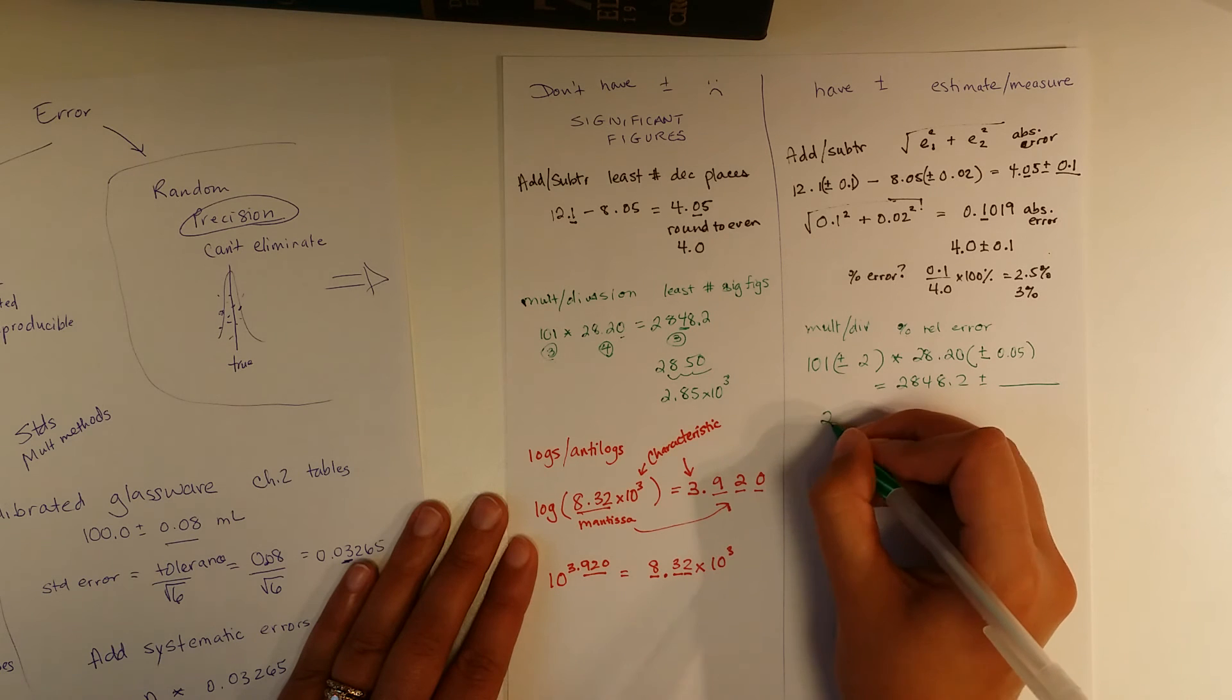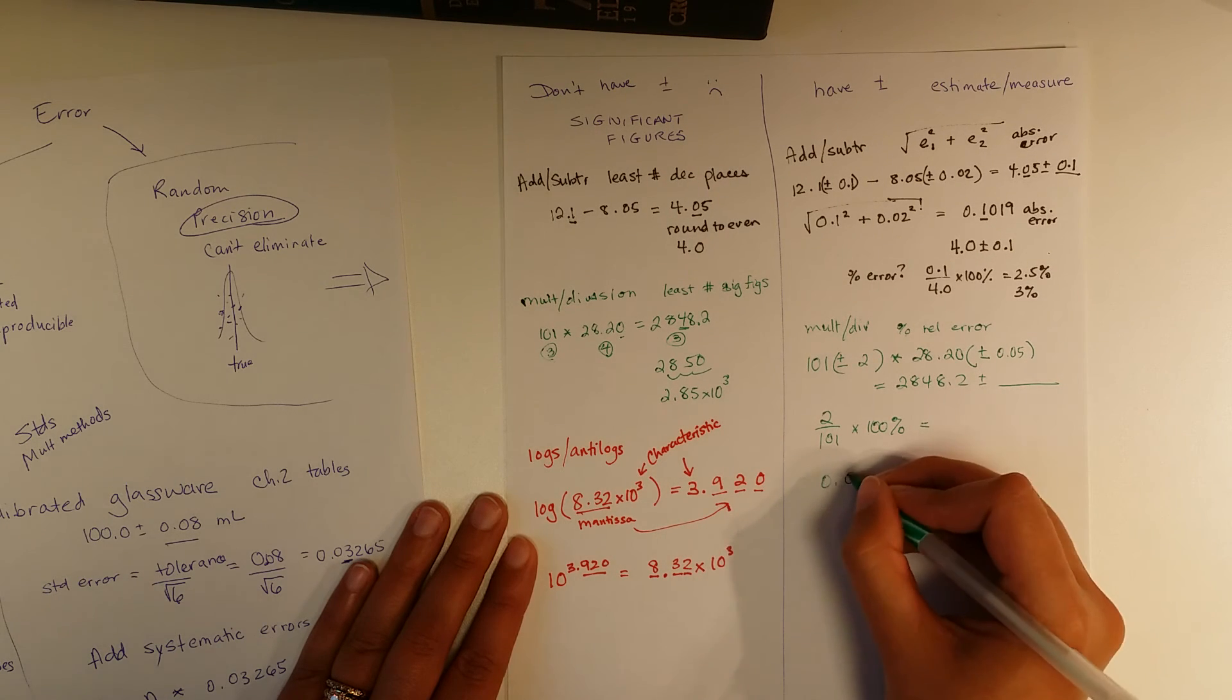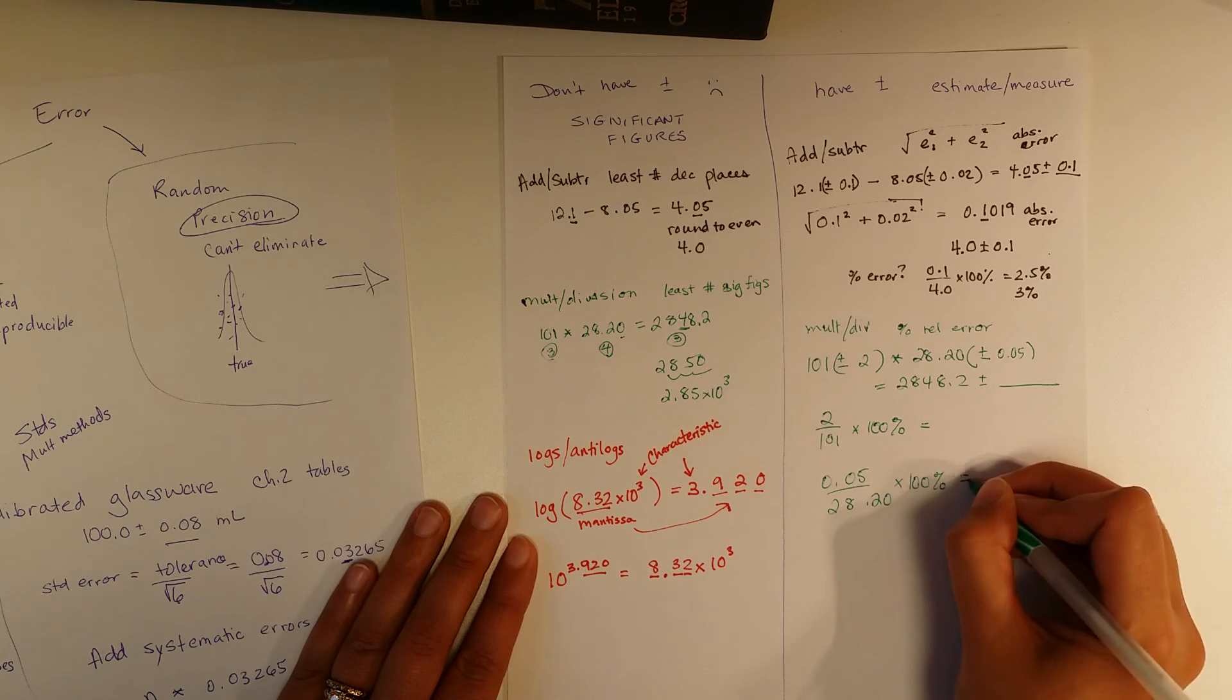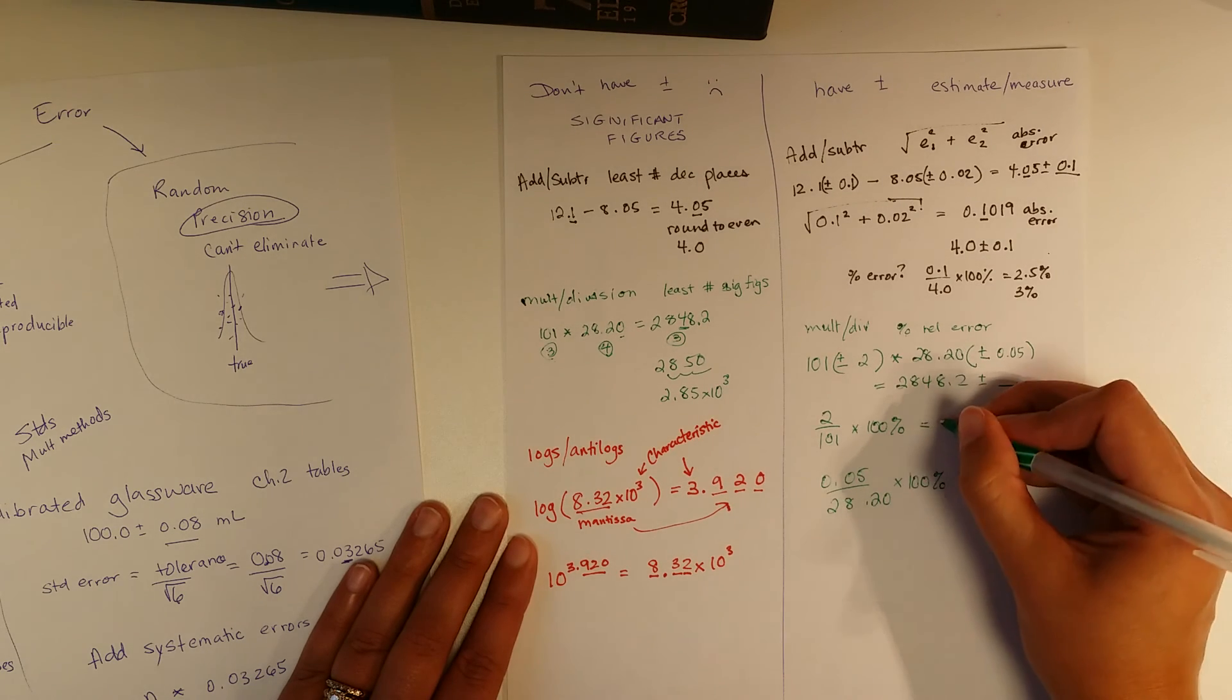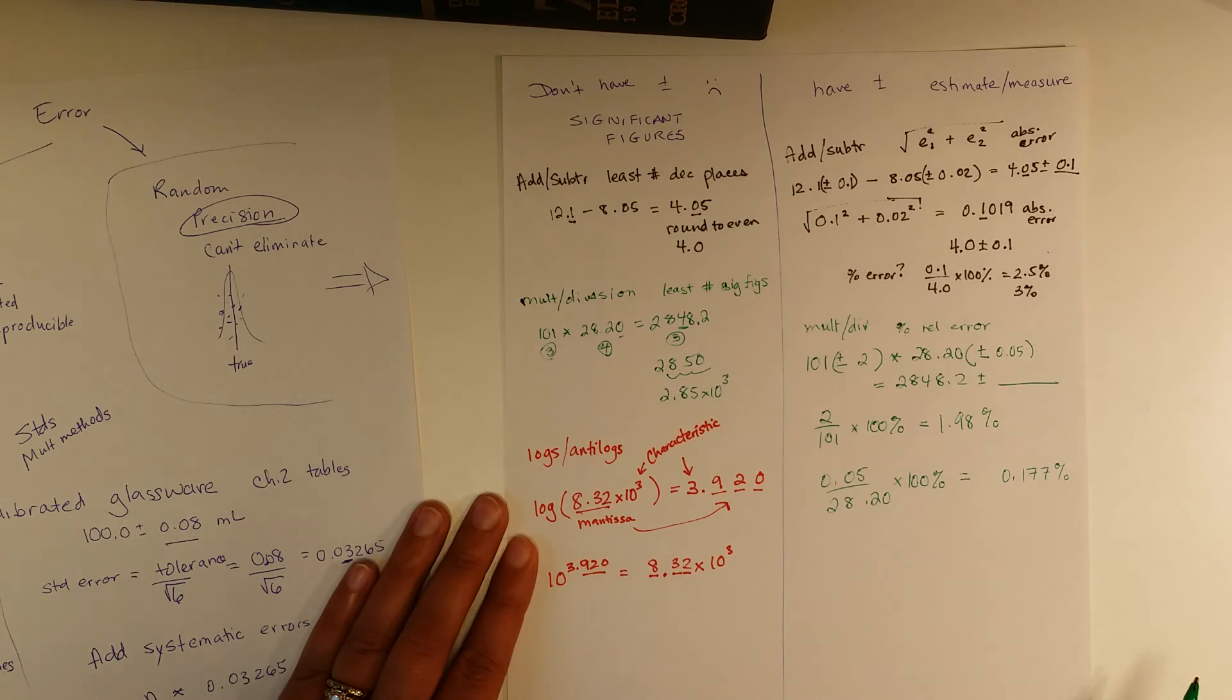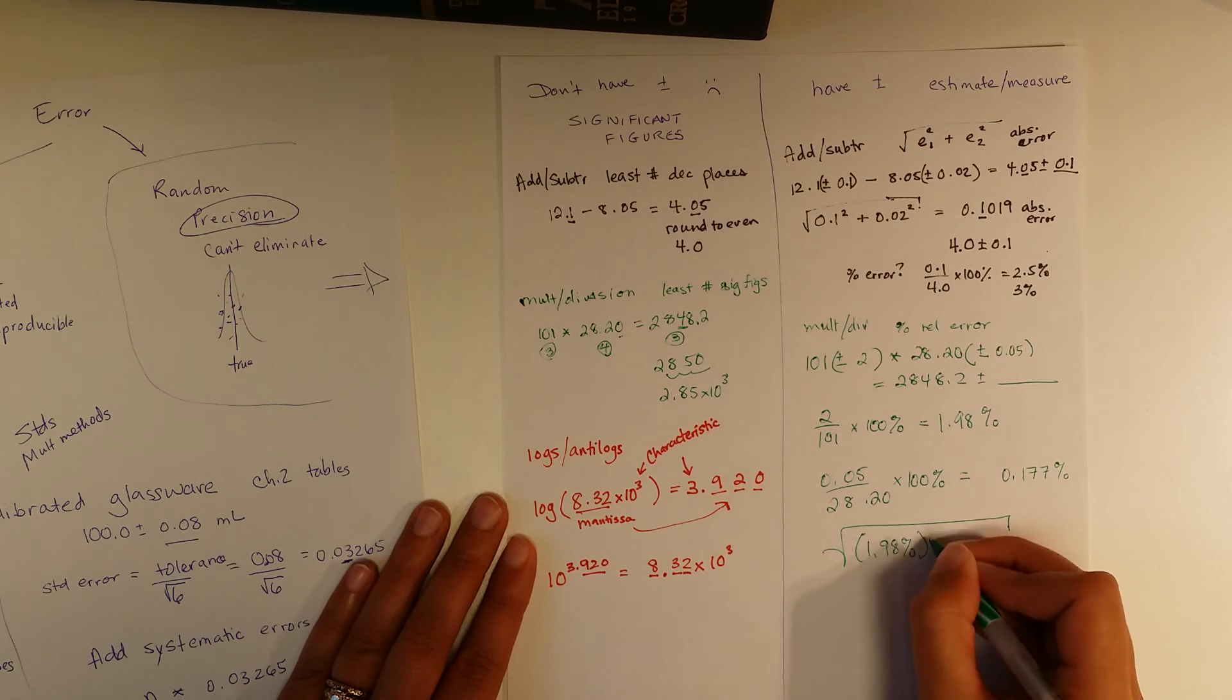So convert your errors into percent relative error. Aren't we having fun? If anything, this should make you feel a little more comfortable for your test. Hopefully this is making it a little bit more basic. Okay, so we've got these percent errors. I put that into my calculator earlier to save a little time on the video. That's 1.98%. And this one is 0.177%. You will notice I'm keeping extra sig figs because I don't want to have a rounding error. And then you set up the square root of the sum of the squares. But now it is your percentages that you're squaring.